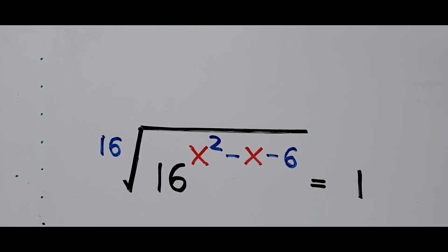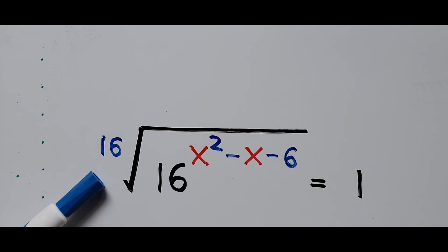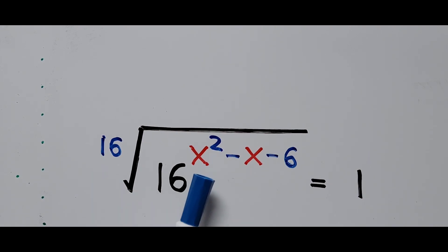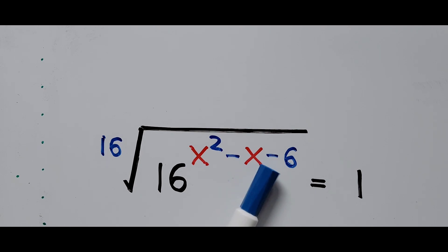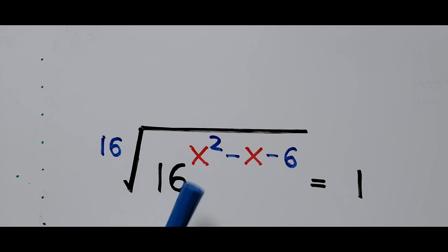Hello everyone, welcome to Cassiano Easy Math. This video is about solving an exponential radical equation: the 16th root of 16 raised to the power x squared minus x minus 6, equals 1. We're going to find the value of x to satisfy the equation. For those new to my channel, please like and subscribe for more videos.